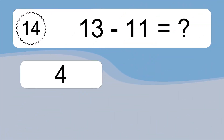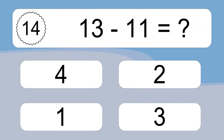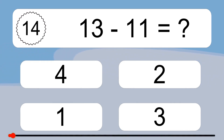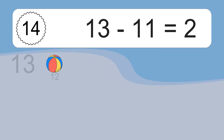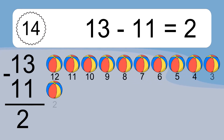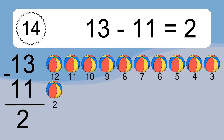13 minus 11 equals what? 13 minus 11 equals 2. Let's count it: 12, 11, 10, 9, 8, 7, 6, 5, 4, 3, 2.